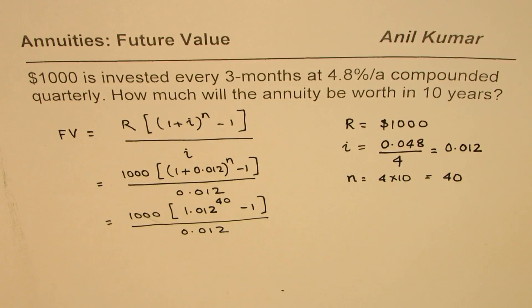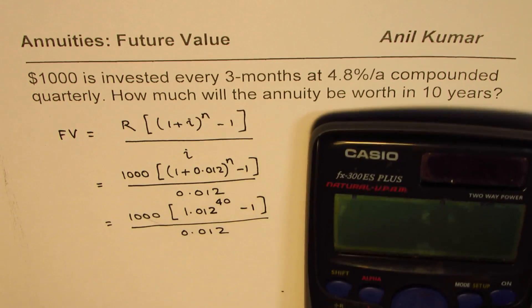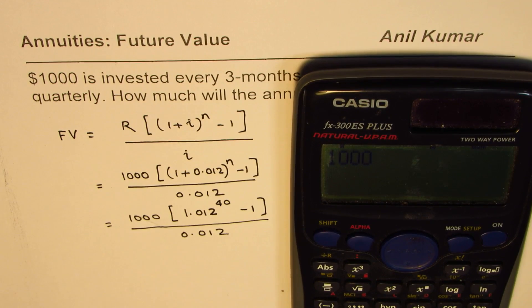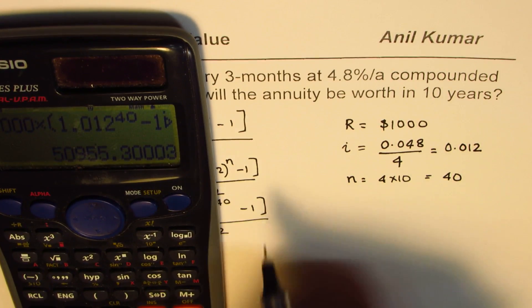That will give us the future value in dollars. 1000 times - let me put brackets here - 1.012 to the power of 40 minus 1, bracket close, divided by 0.012 equals...